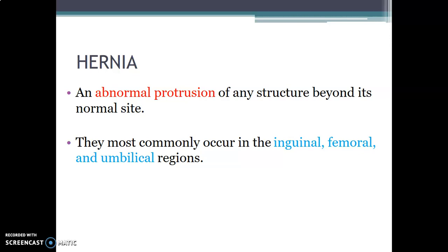So when something is supposed to be located in the abdomen and it protrudes elsewhere, like into the pelvis, you'll see this herniation. Or if it protrudes through the diaphragm into the thorax, we also see herniation. Hernias are commonly found in the inguinal region, the femoral region, and the umbilical region.